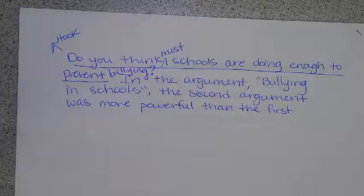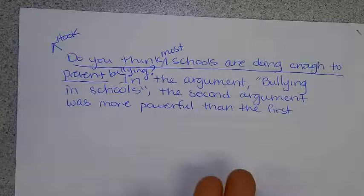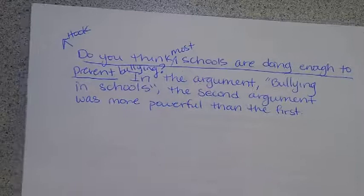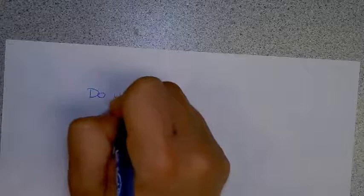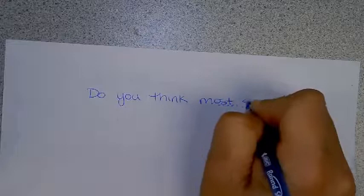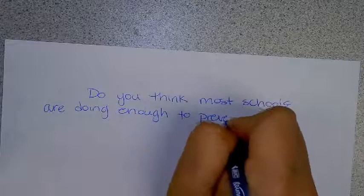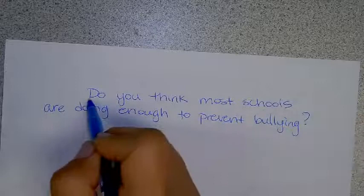Now I'm saying this prematurely, right? Do you know what we're even talking about? So this is where we have to backtrack. We need a hook and we need some background information. So don't be afraid to start over. On the back of your packet, let's try this again. Let's start with our hook: do you think most schools are doing enough to prevent bullying? There is our hook and we're going to underline this and label it 'hook'.